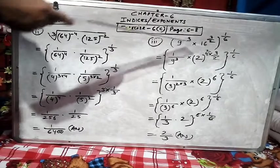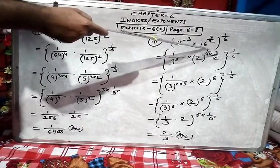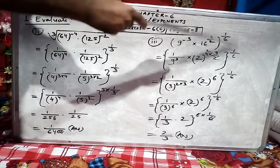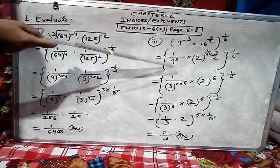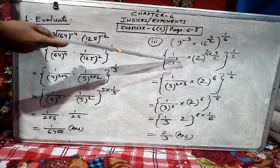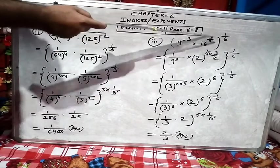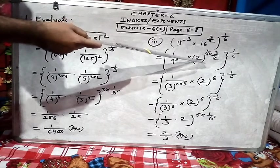Third number question: 9^-3 multiplied with 16^(3/2), the whole to power 1/6. Again I have done this negative power as positive - 1 goes up, 9 comes down, and power becomes positive. Here power is already positive, so no need to change. I wrote 16 as 2^4.